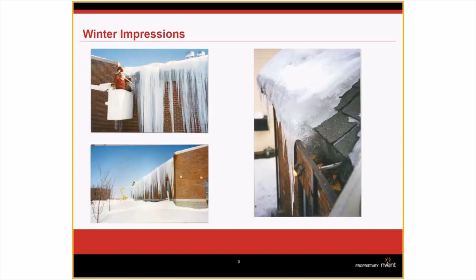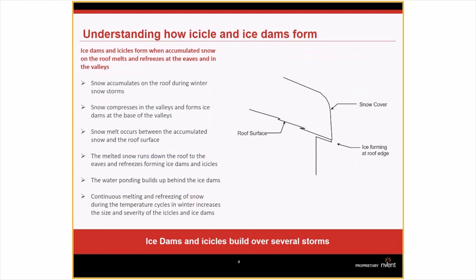Winter can pose interesting challenges — extreme and unexpected cold temperatures can pose significant safety risks to both people and property. When we look at ice dams and icicle formation, it's the accumulation of snow on your roof that melts and thaws throughout the winter creating small icicles. These build up over time and melt water backs up under your roof surface, eventually penetrating inside your building.